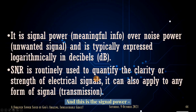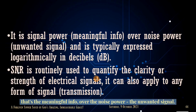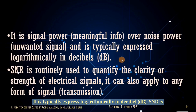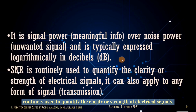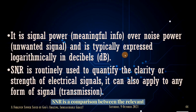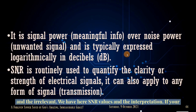The signal power represents the meaningful information, over the noise power — the unwanted signal. It is typically expressed logarithmically. SNR is routinely used to quantify the clarity or strength of electrical signals, and it can also apply to any form of signal transmission. SNR is essentially a comparison between the relevant and the irrelevant.